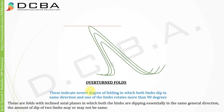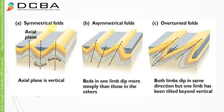Next we have overturned folds. These indicate a severe degree of folding in which both limbs dip in the same direction and one of the limbs rotates more than 90 degrees. These are folds with an inclined axial plane in which both limbs dip essentially in the same direction, and the amount of dip of the two limbs may or may not be the same. There is a pictorial representation showing all these fold types.